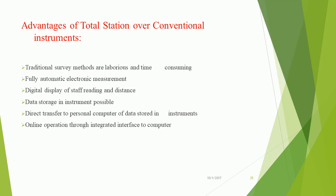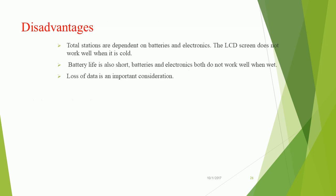Advantages of total station over conventional instruments: Traditional survey methods are laborious and time consuming. The total station offers fully automatic electronic measurement, digital display of staff reading and distance, data storage in the instrument, direct transfer to a personal computer, and online operation through an integrated interface to a computer.